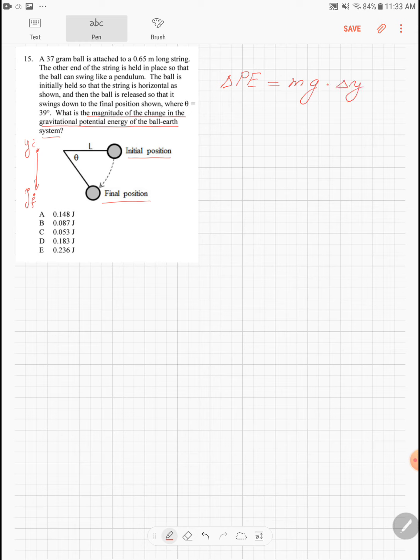Delta y is given by y final minus y initial. So delta y is y final minus y initial.